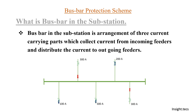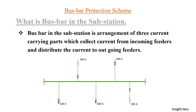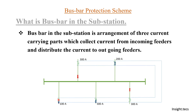Now how does this scheme actually work? We have CTs provided in all the feeders. We connect all the CTs in a particular way and provide one relay. The type of relay and the type of bus bar protection we are discussing here is the bus bar differential scheme. To implement it, we have one differential relay, and we connect all the CT feeders in parallel with the differential relay provided in between them.